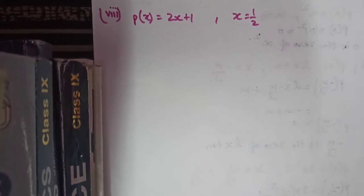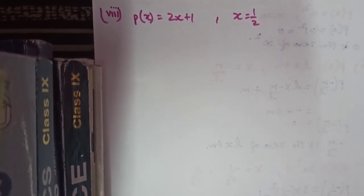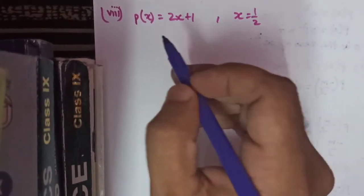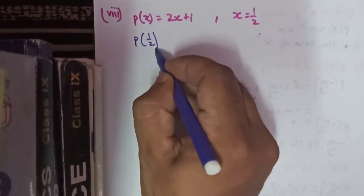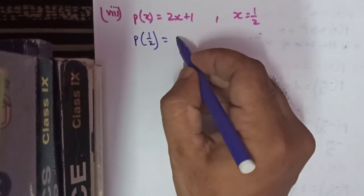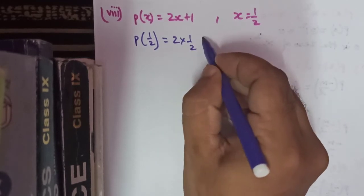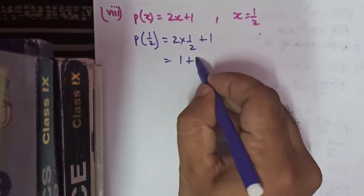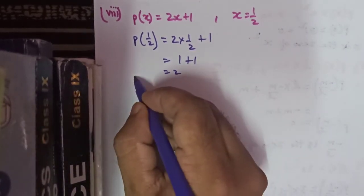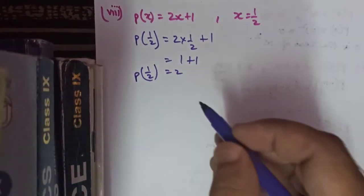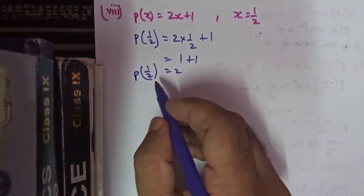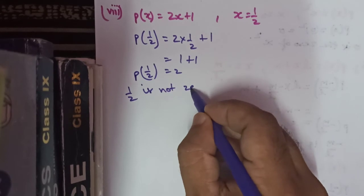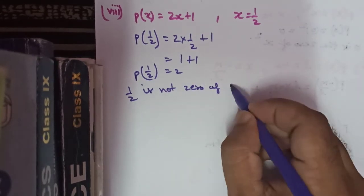In the last part of question 3, we check whether 1 upon 2 is the zero of the polynomial p(x) equals 2x plus 1. We find p(1 upon 2): 2 times 1 upon 2 plus 1 equals 1 plus 1 equals 2. Since p(1 by 2) is not equal to 0, we say that 1 by 2 is not the zero of polynomial 2x plus 1.